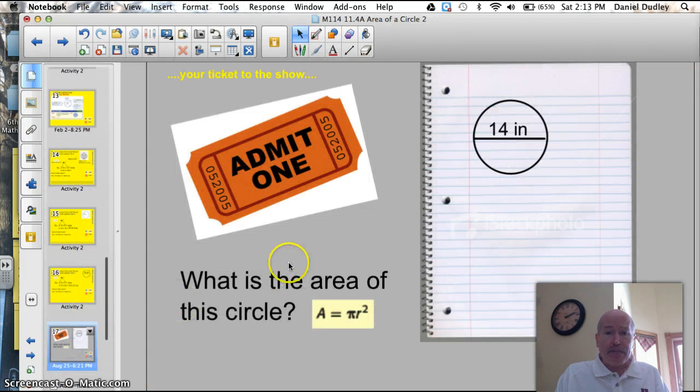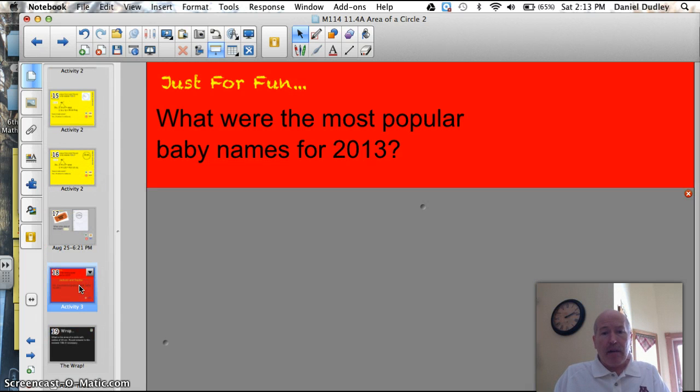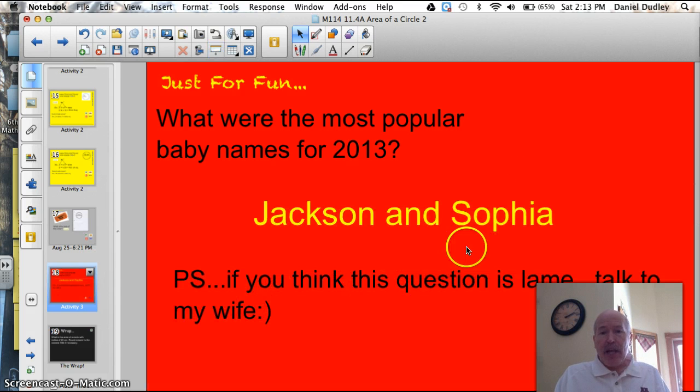Let's get to the ticket. What is the area of this circle? Just one problem tonight, and there's your formula. Area equals pi r squared. Go ahead. All right, let's see. What are the most popular names for boys and girls given to babies in the year 2013? I never would have guessed this. Jackson and Sophia. I like them both a lot. I just never would have guessed that. Okay, so if you think that question is lame, talk to my wife. Thank you, and have a great night. Bye.